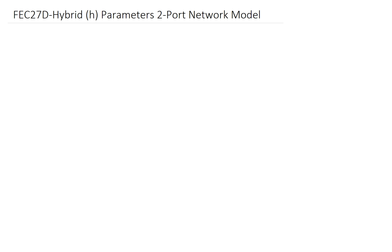In this video we're going to focus on hybrid or H parameters for two-port networks. Previously we talked about Z, the impedance parameter, where most parameters were V over I. Then we talked about admittance, which is basically 1 over Z, or Y parameters. Now we're going to mix it up and look at H parameters. H parameters came about because of semiconductor folks who analyze transistors, and they are very well suited for that function.